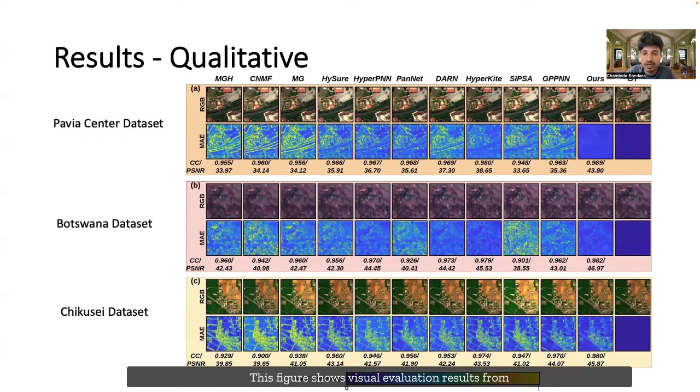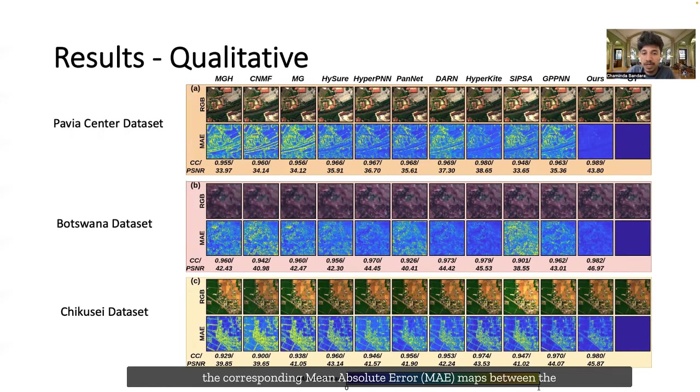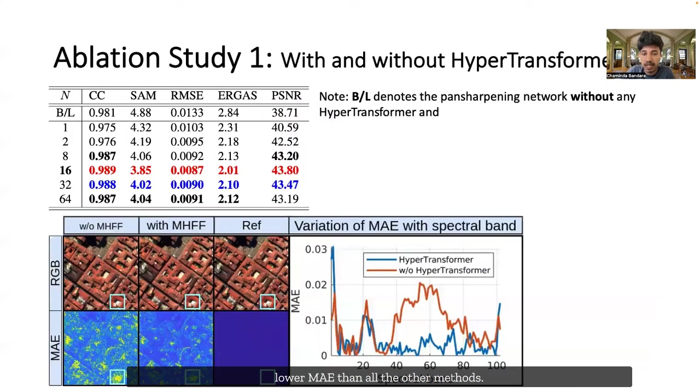This figure shows visual evaluation results from the testing set of each dataset. We present the synthesized RGB images along with the corresponding mean absolute error maps between the reconstructed HSI and the reference HSI. As can be seen from the MAE images, our hyper-transformer achieves significantly lower MAE than all the other methods.